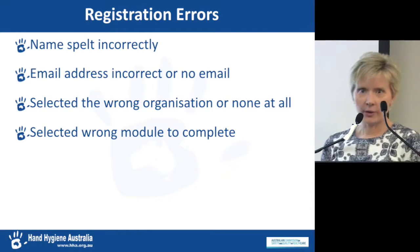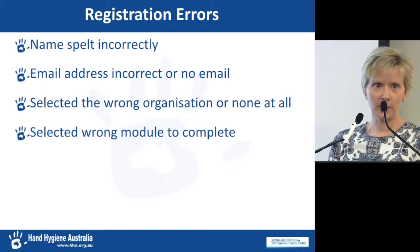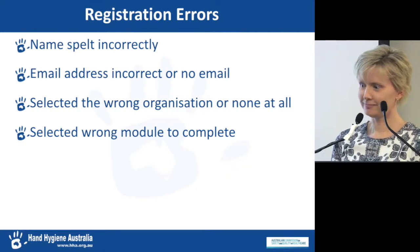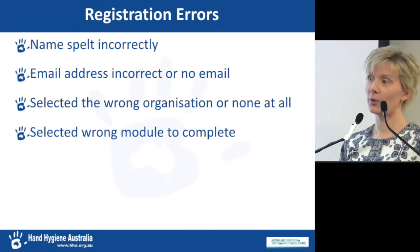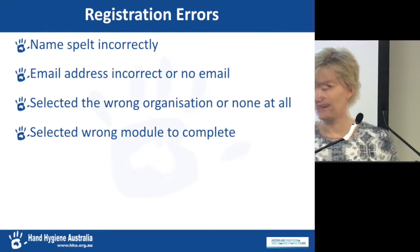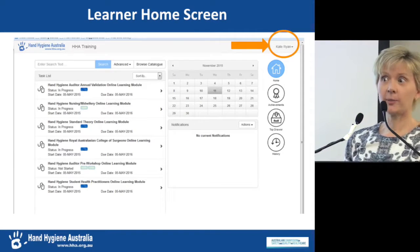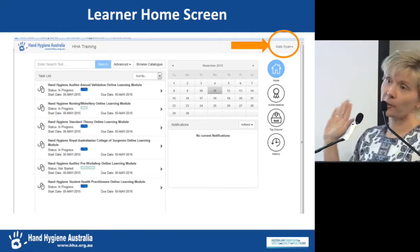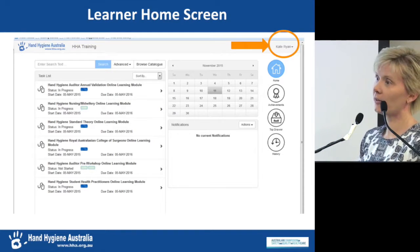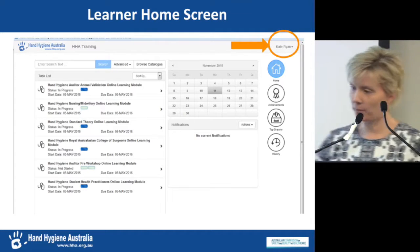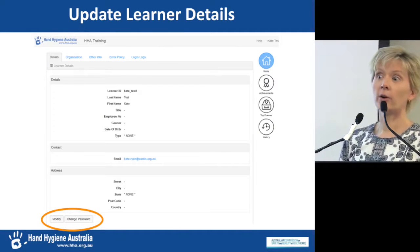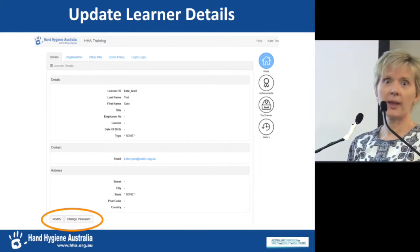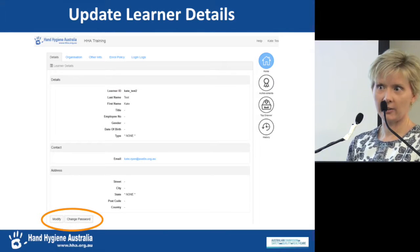Other errors that occasionally occur include people spelling their name wrong, entering the wrong email address, selecting the wrong organisation, or selecting the wrong module. To assist, if they can log in, they can click on their name in the top corner, select the personal profile button, and update all their details — their name, email address, or anything else they need to change.